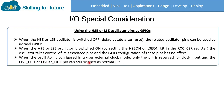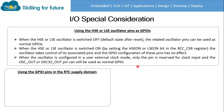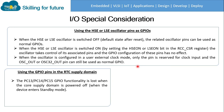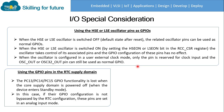When the oscillator is configured in external clock mode, only the pin is reserved for clock input and the oscillator output pin can still be used as normal GPIO. Next is using GPIO pins in the RTC supply domain — like PC13, PC14, PC15 — where GPIO functionality is lost when the core supply domain is powered off, such as when the device enters standby mode.